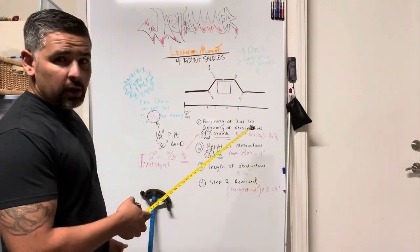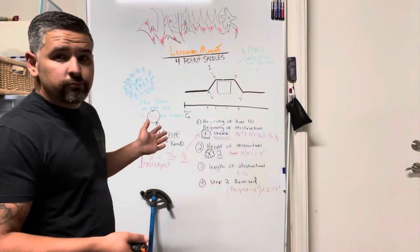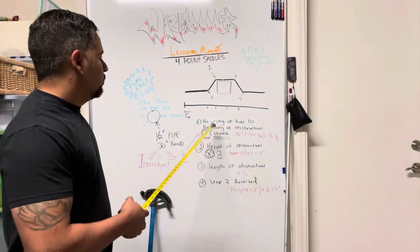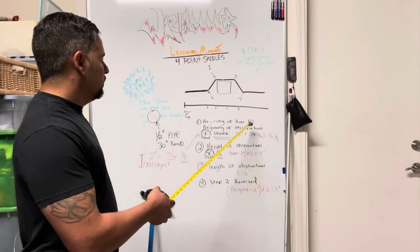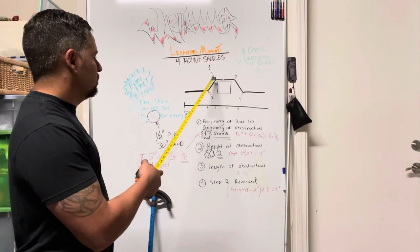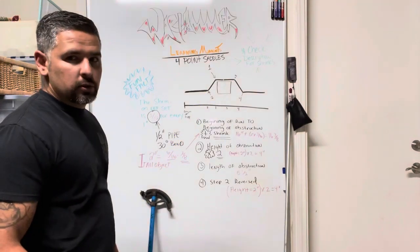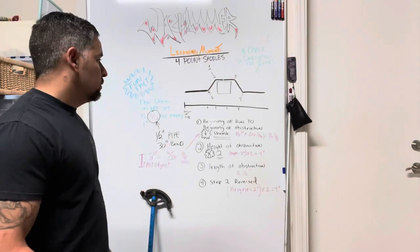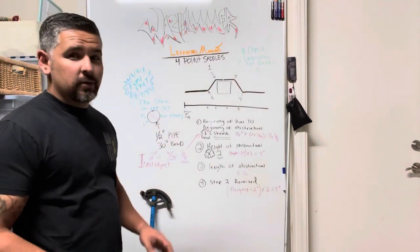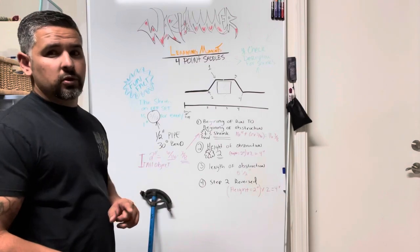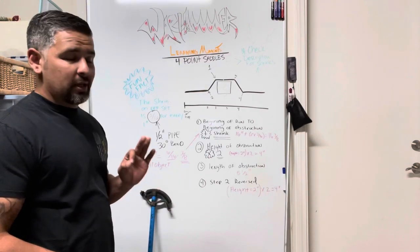Let's just say for whatever sake it's 16 inches away. So we'll go to the beginning of the run to the beginning or the edge of your obstruction, and then you're going to add the shrink. So in this particular class, we're going to do 30 degrees, which the shrink is 3/16.